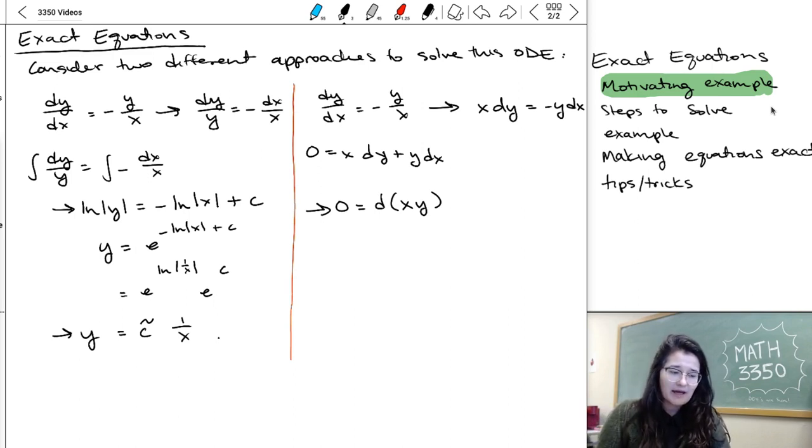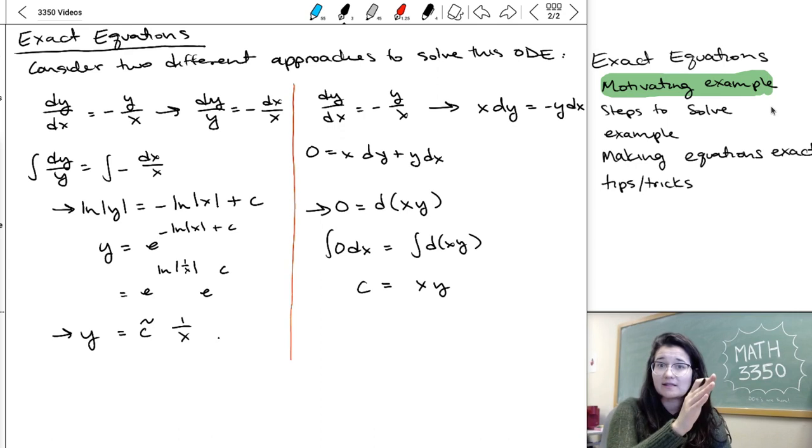But if we go ahead and try to integrate both sides of this, I could have like integral of 0 dx is the integral of d(xy). So I would just get some constant is equal to xy, where the constant on the left takes care of the constant that would also be on the right. Or I arrive at the same solution, y equals c over x.